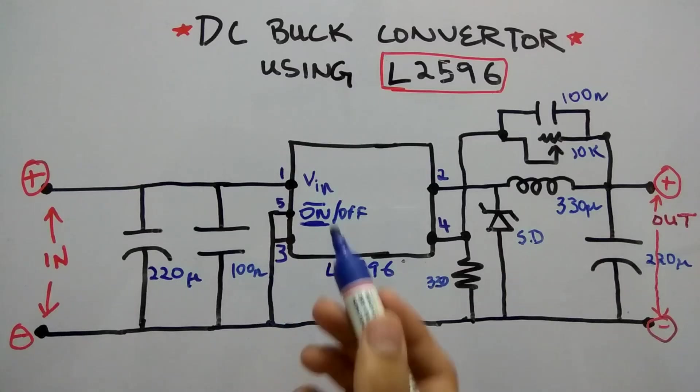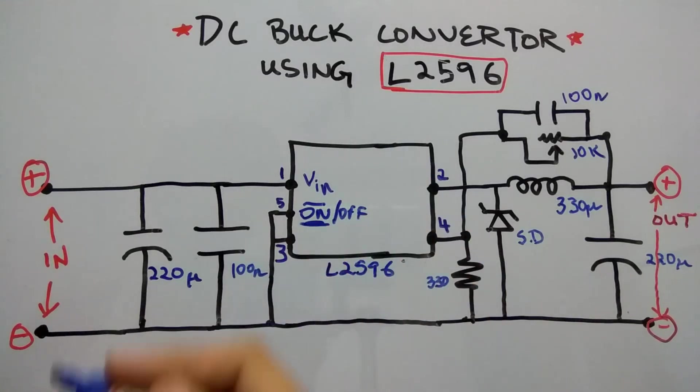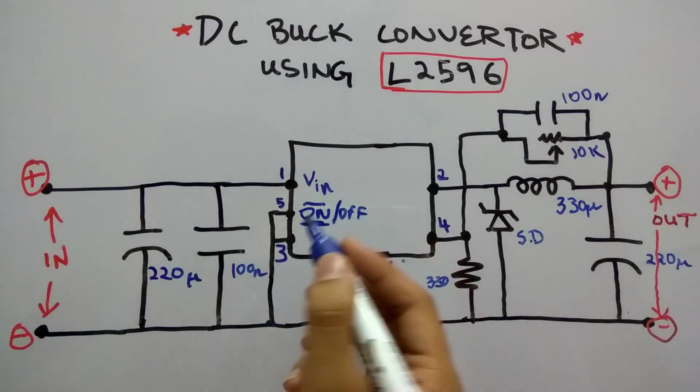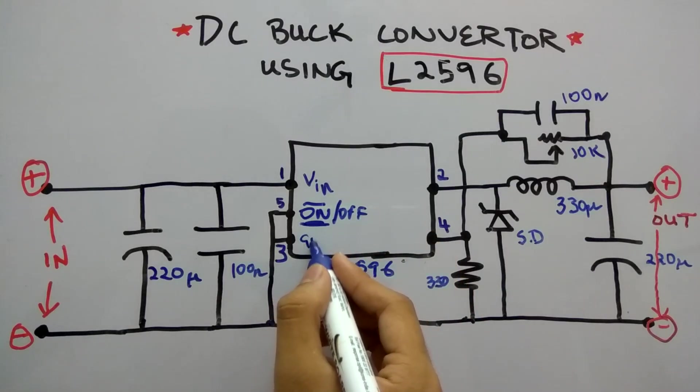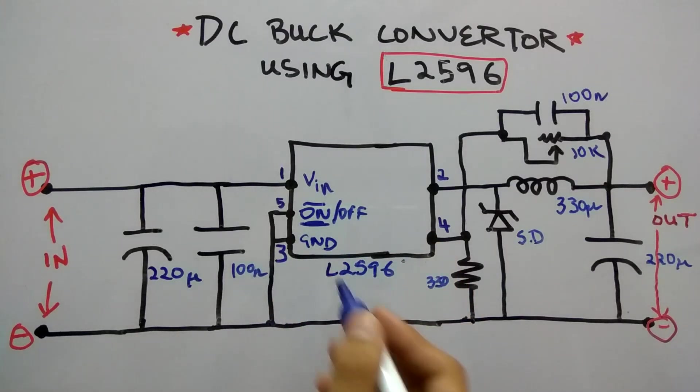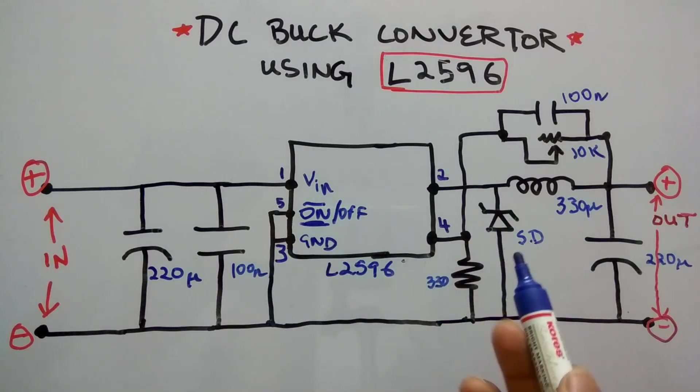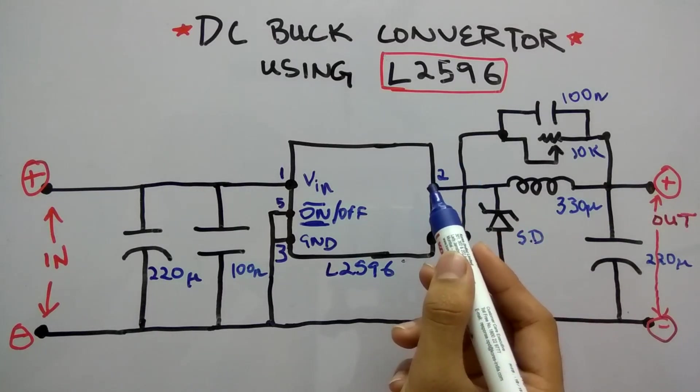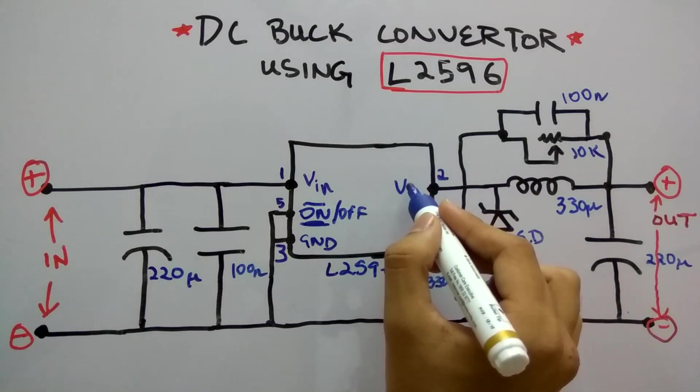The IC, the L2596, is in the on state because of this grounding. The third pin we saw was a ground of the IC, so that is also connected to the ground. Moving to the output side, there is some complex circuitry right here.